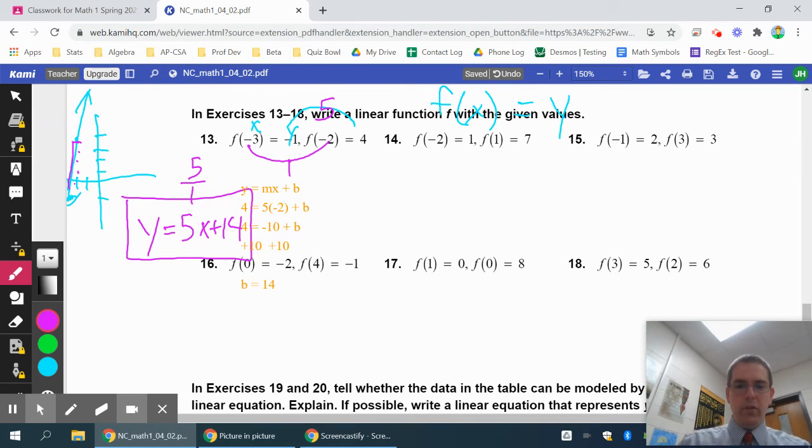This one with the zeros is actually pretty straightforward, but it might scare some people, so we'll do it real quick. Remember, this is the x and the y-coordinate, so it's the point 1, 0. And that's the x and the y, so it's the point 0, 8.